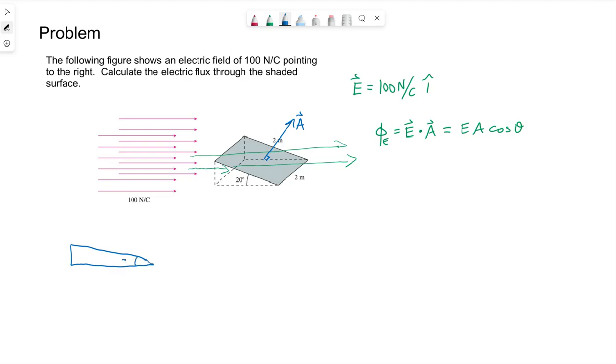So the electric field we already know is in the x direction. Normal to the surface, I'm going to draw my normal right here. That's my area vector.